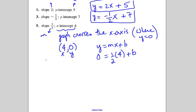4 times 1 half, this is like 4 over 1. So 4 times 1 half reduces to 2. So 0 equals 2 plus b. We're going to get b by itself, so we have to subtract 2 from both sides. So b is equal to negative 2. So the equation of the line, now that we have b in y-intercept form, is y equals m, which is 1 half, x plus b, which is negative 2.